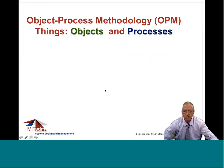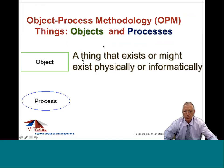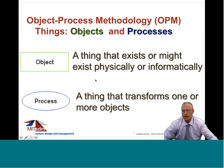In OPM — Object Process Methodology — we talk about things categorized into stateful objects and processes that transform them. An object is defined as a thing that exists or might exist physically or informatically. A process is a thing that transforms one or more objects — where transforms means either generates, consumes, or affects (changes the state of) an object. Here is how this is expressed both graphically and textually.